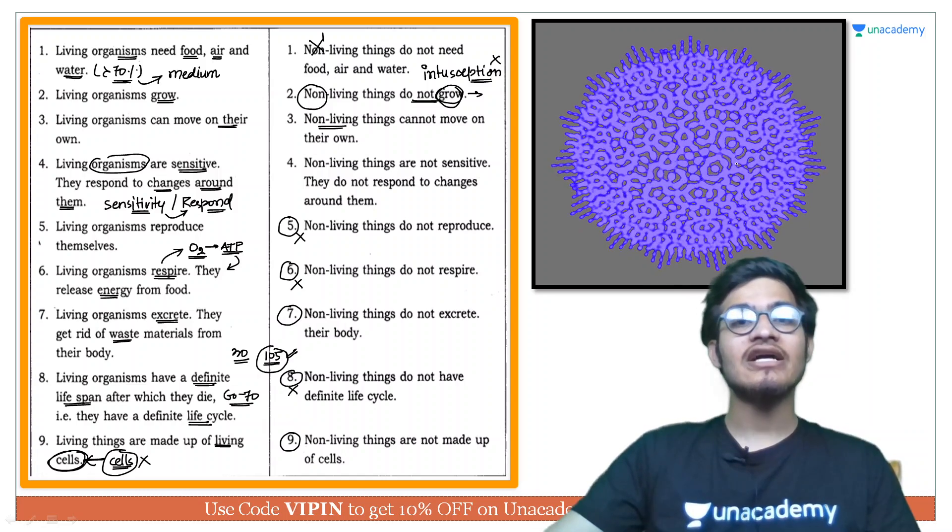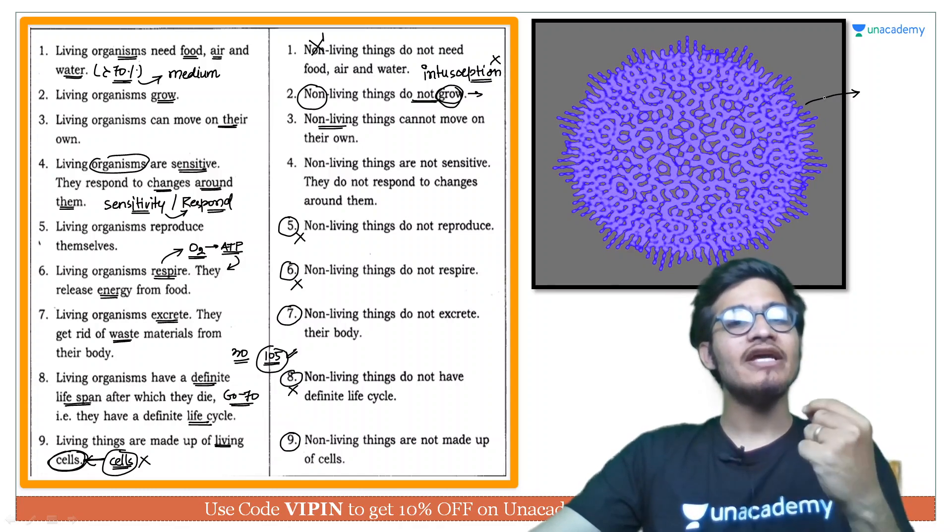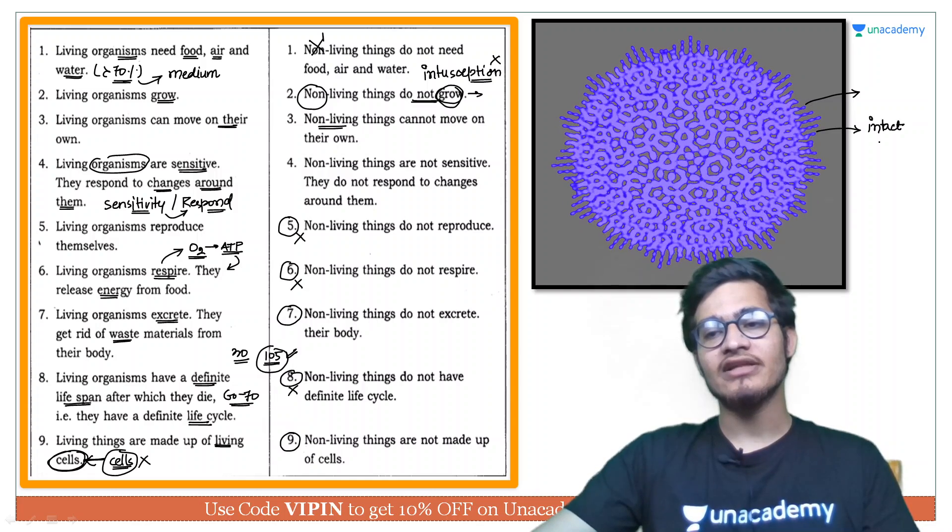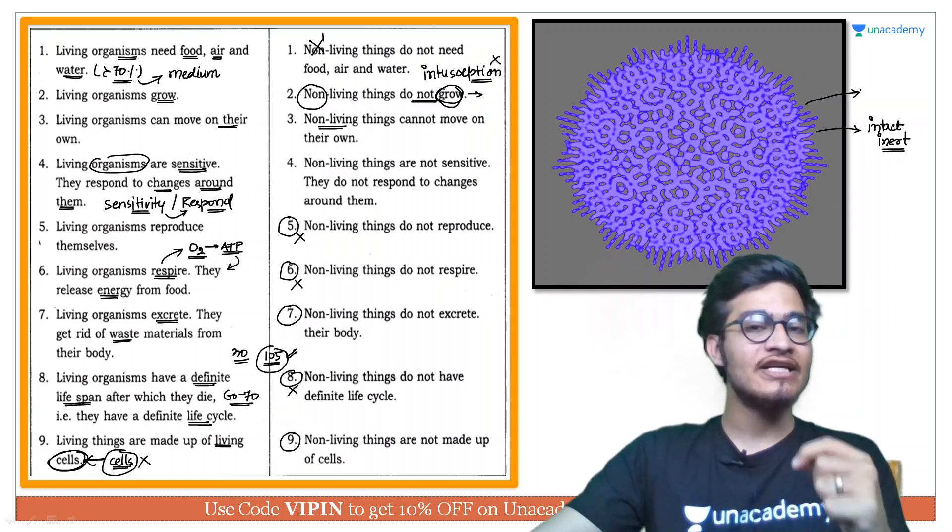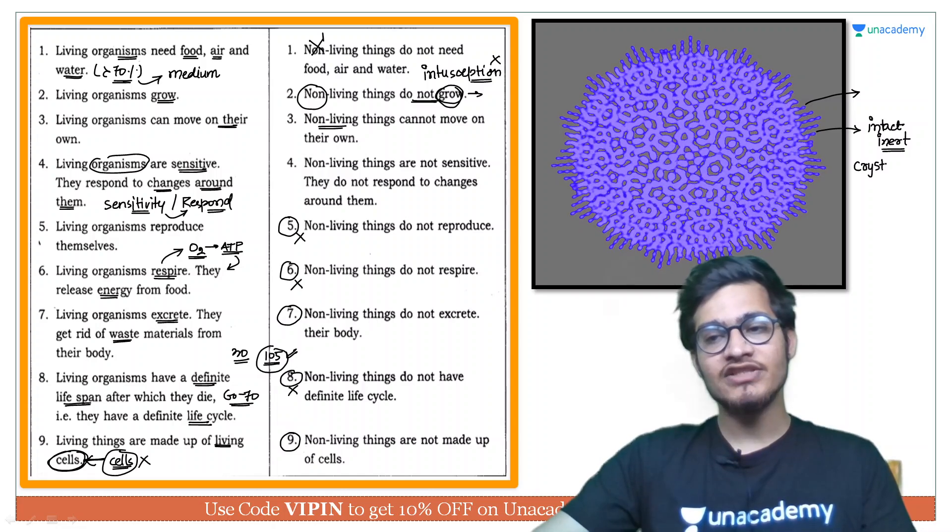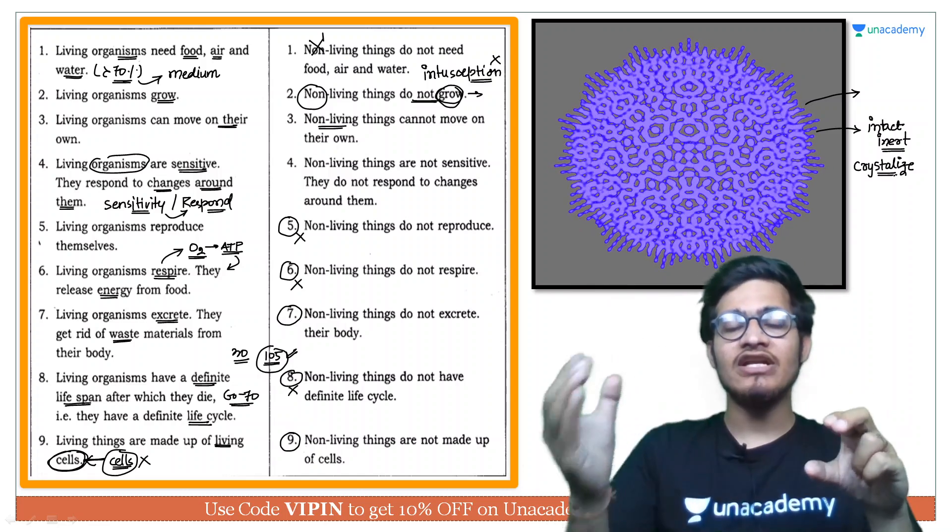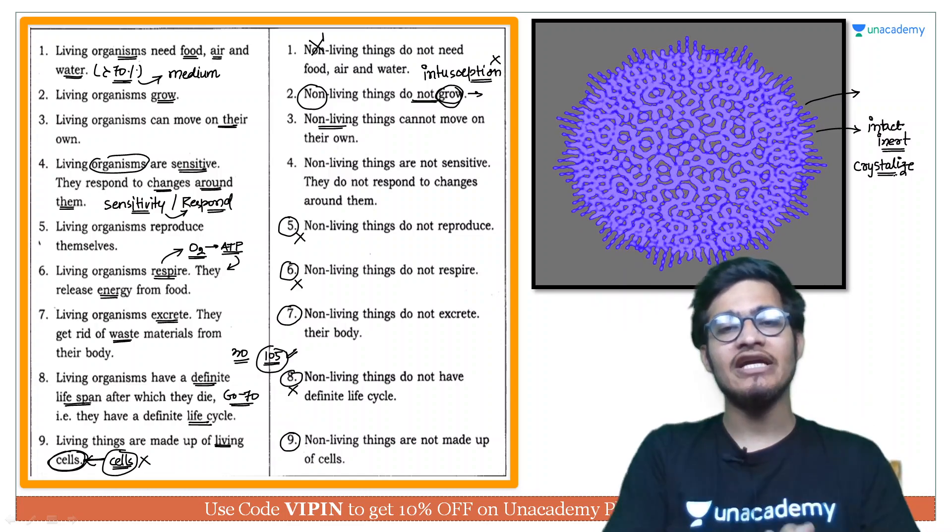Yaha par agar aap is virus ko dekhoge then this virus is a connecting link between living and non-living organisms. Is mein living ke bhi characteristic features hote hain aur non-living ke bhi. Ye jab kisi host ki body ke andar ghusta hai toh apne DNA ko replicate karna start kar deta hai aur apni aur copies bana leta hai. Lekin jab ye kisi organism ki body ke bahar pada rehta hai toh ye intact aur inert form mein pada rehta hai yani ki ye non-living ke characters ko show karta hai. Jab ye kisi organism ke andar jayega to bimari cause karega yani it is working as a living organism but jab ye kisi ki body ke bahar pada rehta hai toh ise aap crystallize bhi kar sakte hain which is an important property of non-living things. Toh zaahir si baat hai virus is a link between living and non-living kyunki ismein dono ke features hote hain aur isi liye isko yahan par maine consider kiya hai. Virus ke baare mein you are going to study in detail in the biological classification chapter.